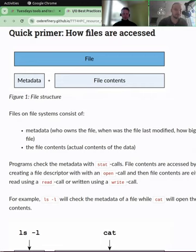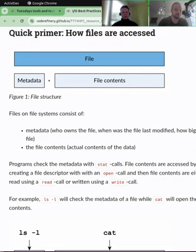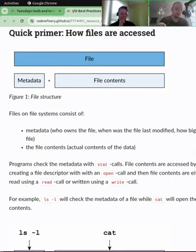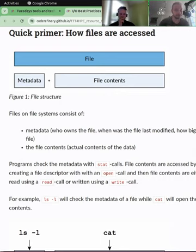This metadata doesn't mean metadata like your dataset description — it means things like who owns the file, when it was last modified, how big the file is. The file contents is the actual byte data inside. The file system sees the metadata and the file contents. When metadata is accessed, this is done using so-called stat calls, which check the status of the file.